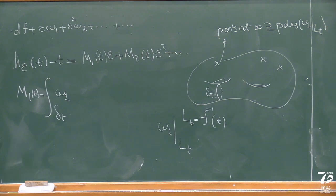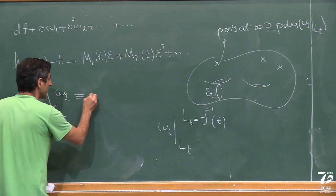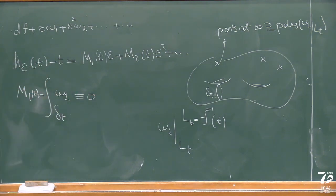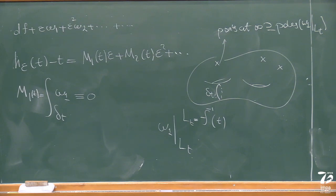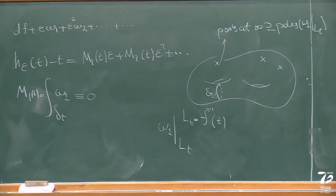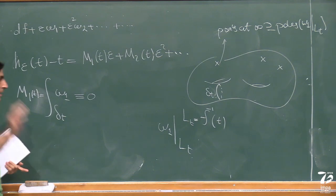Even though we come from the real context, we can complexify and look at it in the complex context. It was mentioned that M_1 can be identically zero. This can happen even in the real context, as was mentioned today. Ilyashenko's theorem in Mardesic's talk has to do with this: when M_1 is identically zero, we can classify omega_1 and so on. Let me forget the real context and give you an example of when this might exactly happen.